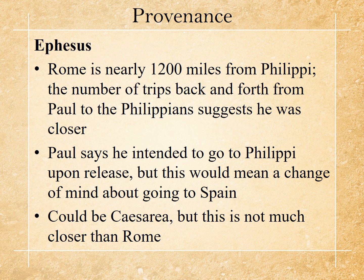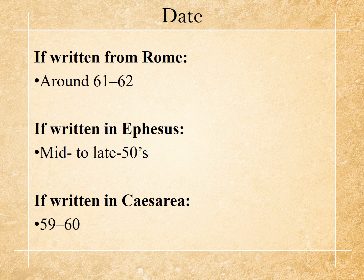Some have suggested he's in Ephesus, because he was in prison there as well. But Rome is nearly 1,200 miles from Philippi. The number of trips back and forth from Paul to the Philippians suggests that he was closer than that. Paul says he intended to go to Philippi upon his release, so this would mean a change of mind about going to Spain. It could be Caesarea, but this was not much closer. So if you take Rome, you would use a date of around 61-62. If you take Ephesus, you would date this letter in the mid to late 50s. If you take Caesarea, you're going to date it 59 to 60.